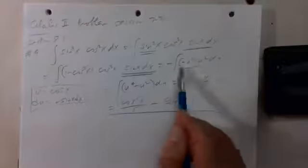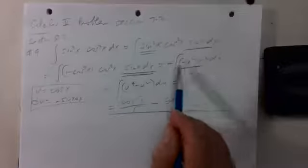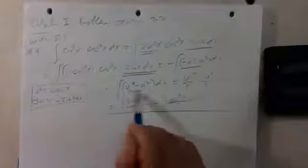This is u squared minus u to the fourth when I distribute, and with the minus sign in front it makes it u to the fourth minus u squared.